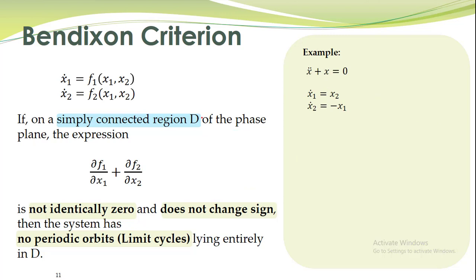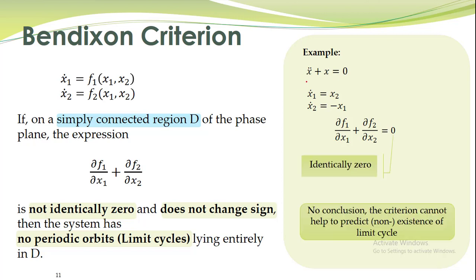Another simple example: when we evaluate the expression it comes out equal to zero — identically zero. In that case, this theorem cannot help us say anything. The theorem gives a conclusion only when the expression is not identically zero and does not change sign. For this particular system, which we have studied before and which has closed orbits, this theorem cannot draw any conclusion.